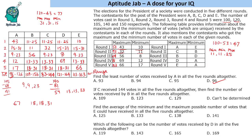If C received 144 votes in all five rounds altogether, find the number of votes received by B. This might seem like the answer cannot be determined, but logically if C received 144 votes, that means C has hit its highest point. If C is on the maximum side, B must be on the minimum side. So if C received 25 in round 1, B must have received 11. Therefore the answer is 109.